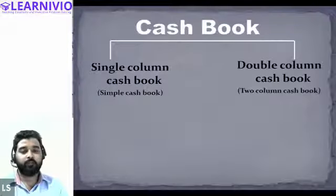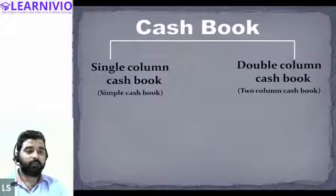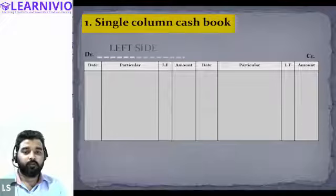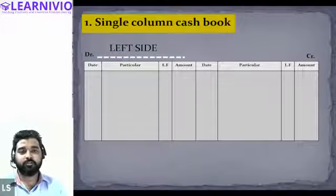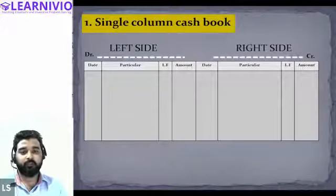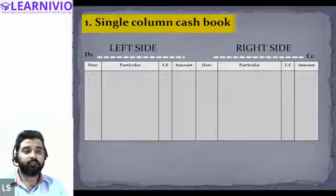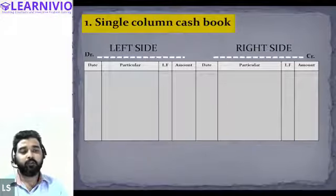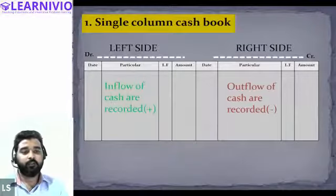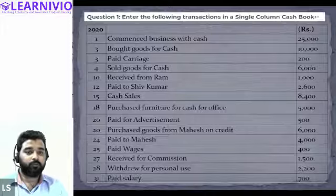In the single column cash book, only cash-related transactions are recorded. In the double column cash book, both cash and bank transactions are recorded. This is the format of the cash book — it has two sides: the left side, called the debit side, where we record all cash inflows, and the right side, called the credit side, where we record all outflows.